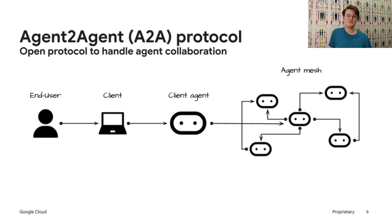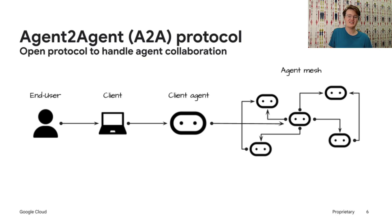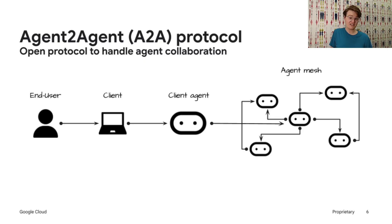A2A facilitates communication between the end user, a client agent, and a remote or server agent. A client agent is responsible for creating requests and handling end-user interaction, while the remote agent is responsible for acting on those requests in an attempt to provide the correct information or take the correct action. Something important to note is that any given agent can act as both a client and a remote agent, depending on the context.